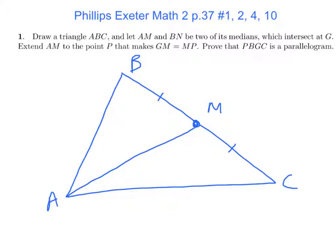BN is another median, so N, so I have to go from B to the opposite side. Make an N there. And these will be equal. Now these intersect at G. So a lot of this is really just drawing the picture.